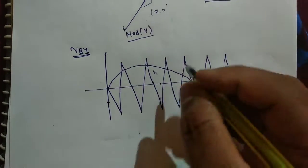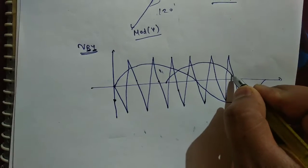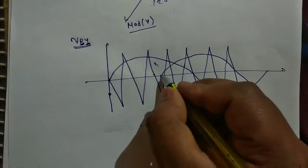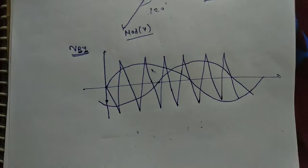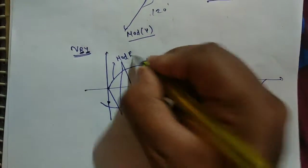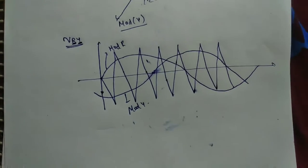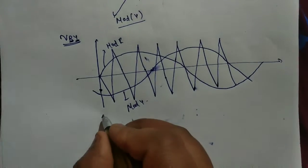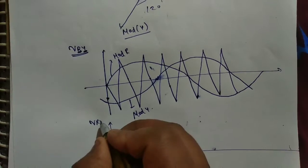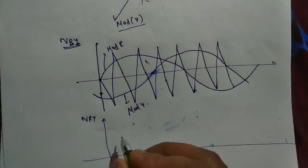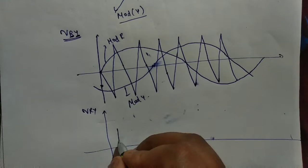Like this, and Y is displaced how much? 120 degrees. So it is displaced 120 degrees, let 120 be here. Like this we will draw - this is mod R and it is mod Y. Now we have to draw V_RY.